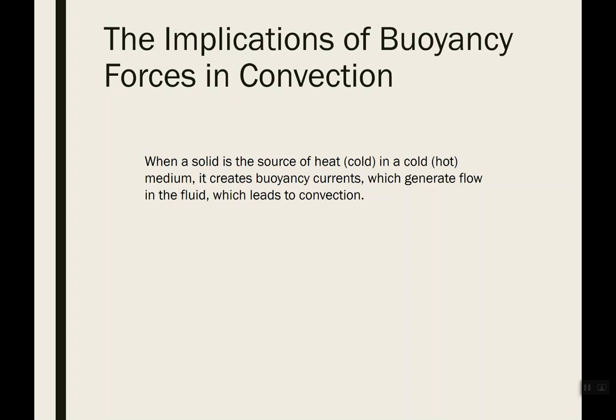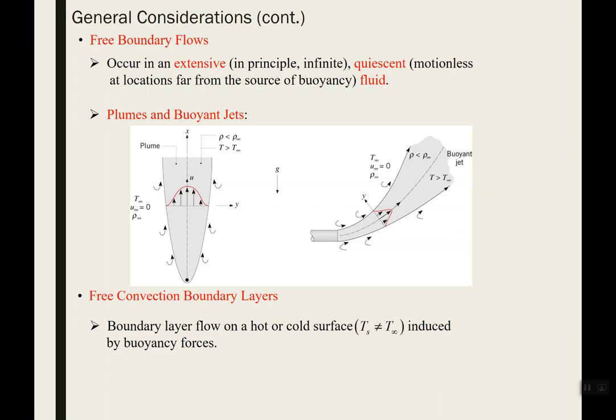The key concept: buoyancy induces flow, and inducing flow makes convection happen. You get fluid flowing against a solid, and it might not be forced by a pump or fan — temperature and density gradients alone start to induce fluid motion. Free boundary flows occur when a quiescent fluid comes in contact with a heated or cooled surface. We still have boundary layers, just like in forced convection, but now it's buoyancy-driven flow instead of a forced flow.